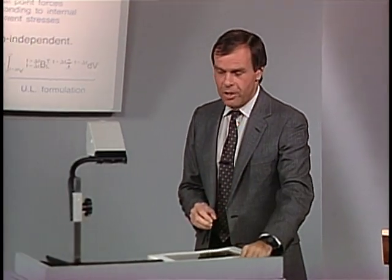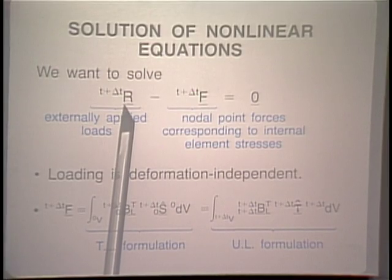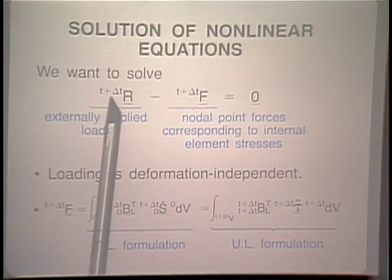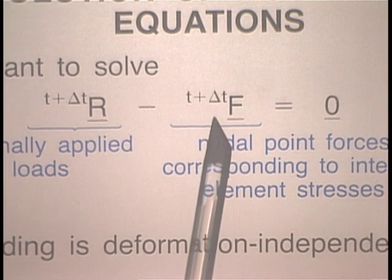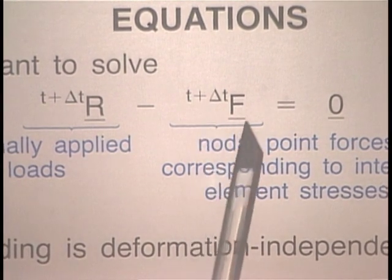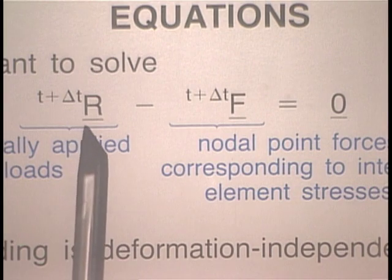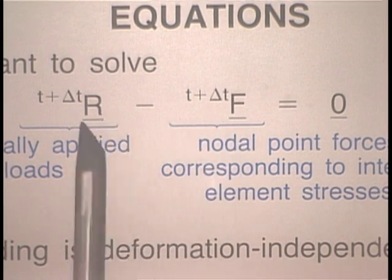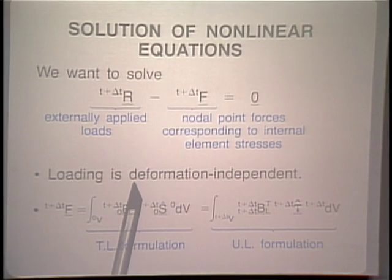The basic set of equations that we would like to solve are given here. R is the vector of externally applied nodal point forces at time t+delta_t, and F is the vector of nodal point forces corresponding to the internal element stresses at time t+delta_t. This vector is unknown, and we want to iterate somehow to find it and make sure that at the end of that iteration, r is equal to f, or r minus f is equal to 0. We assume that the loading is deformation independent.